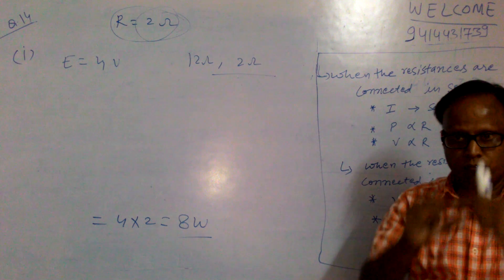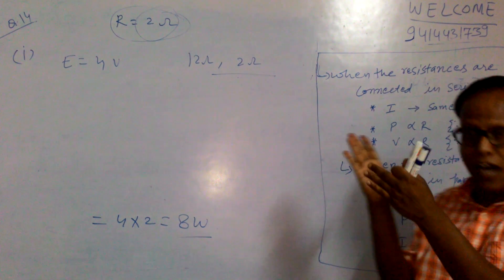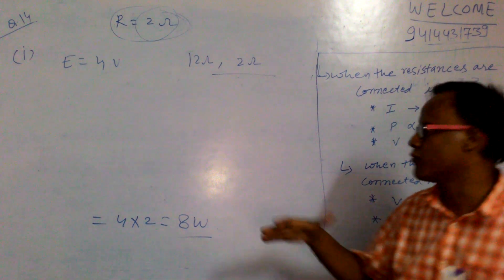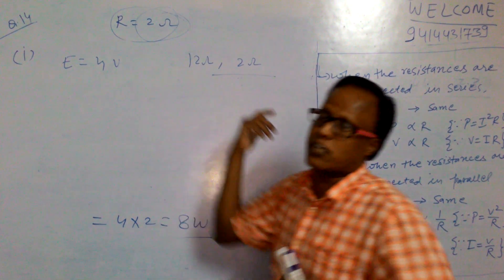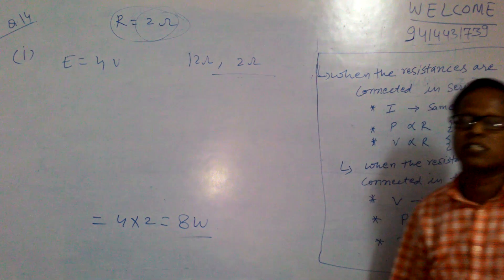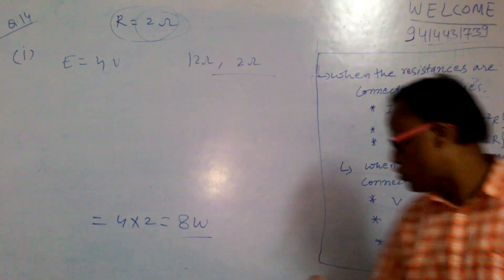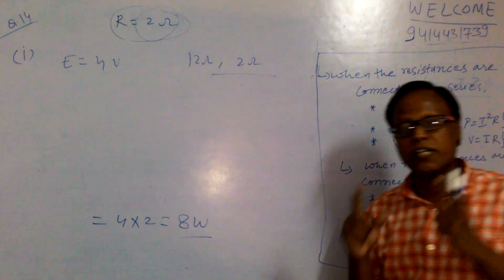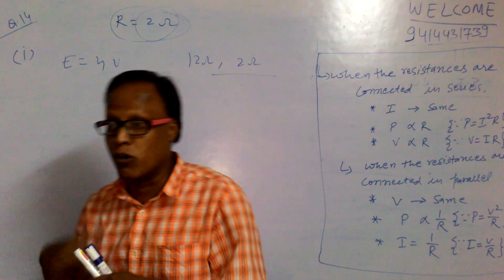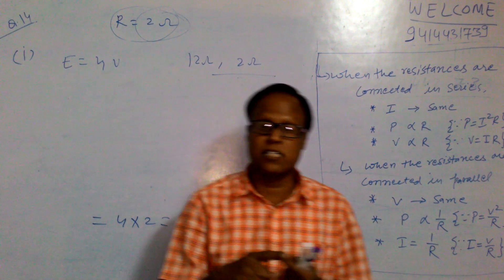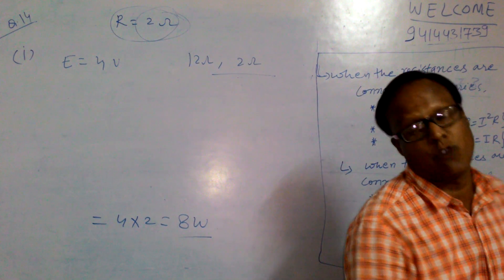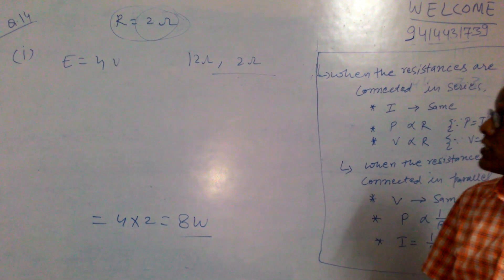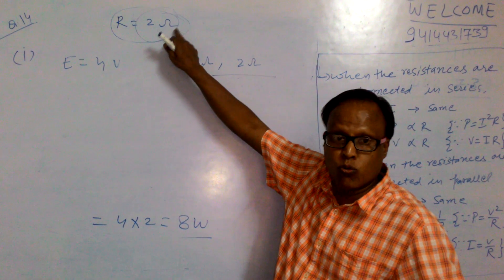V is same. Resistors are connected in series, I is same. When connected in parallel, V is same. So to calculate power, I use the formula now P is equal to V square upon R.